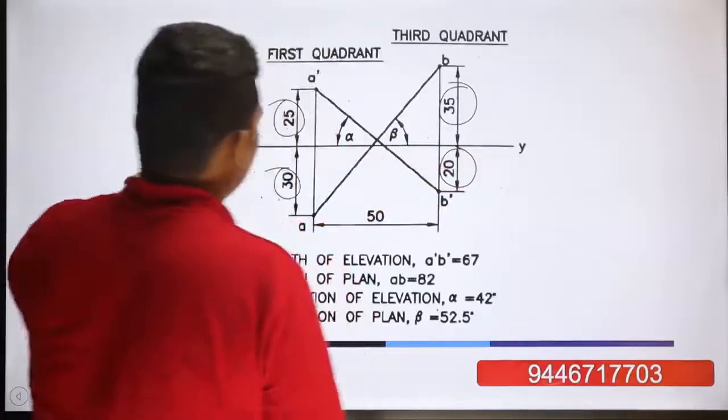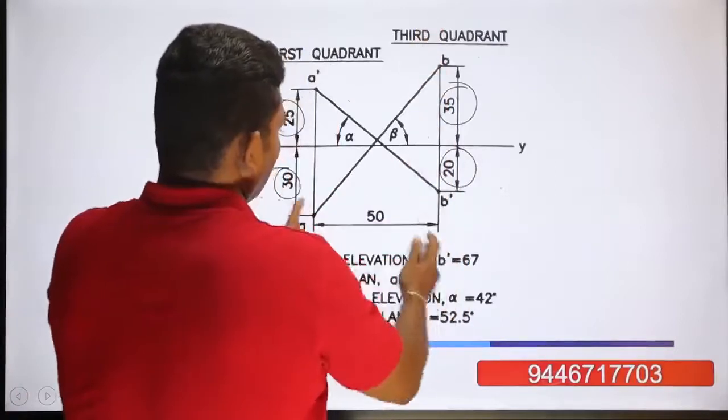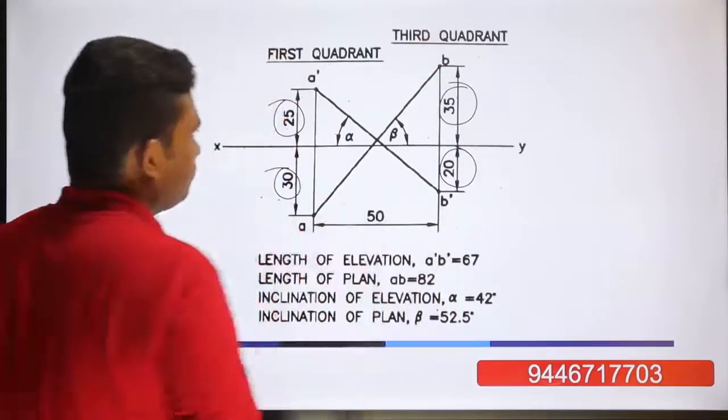These are the two projection lines and the distance between them is 50mm.